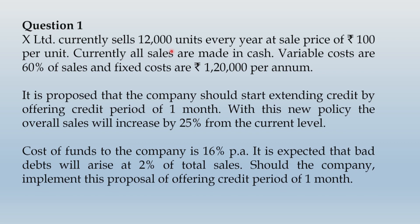With 15,000 units at rupees 100 each, proposed sales value will be 15,000 multiplied by 100, giving rupees 15 lakhs. At the current level, 12,000 units at rupees 100 per unit gives current sales of rupees 12 lakhs. Variable cost is 60 percent of sales, so each unit has a variable cost of rupees 60. Current variable cost is 60 per unit multiplied by 12,000 units, which gives rupees 7,20,000.